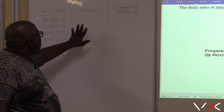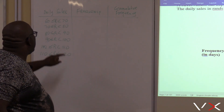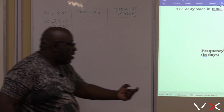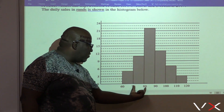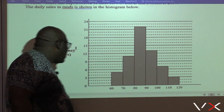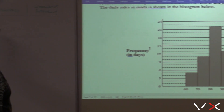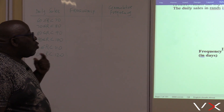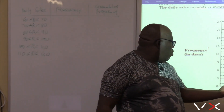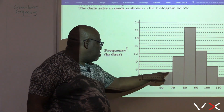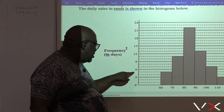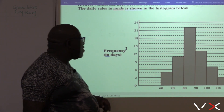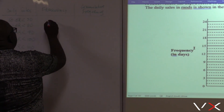How do you find the frequency? You read off from the graph. The daily sales between 60 and 70 — you look at the bars that we have: 60 to 70, 70 to 80, 80 to 90, 90 to 100. What is the frequency if the daily sales were between 60 and 70? You read off from the top of your graph — this is 3, 4, 5. So the frequency there is 5.